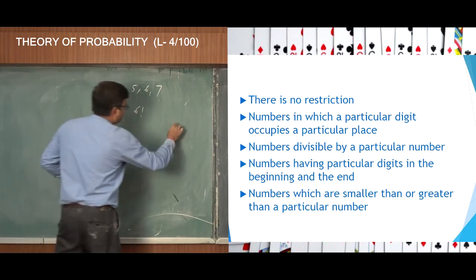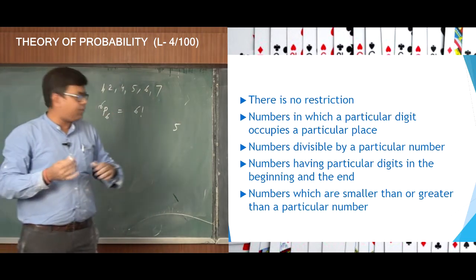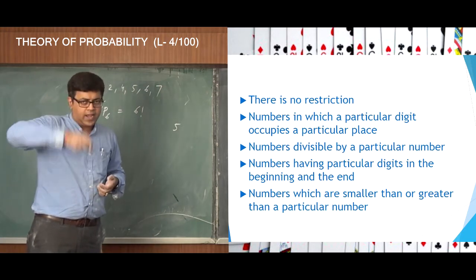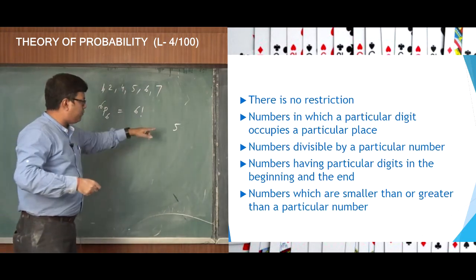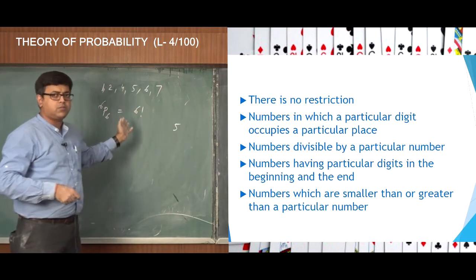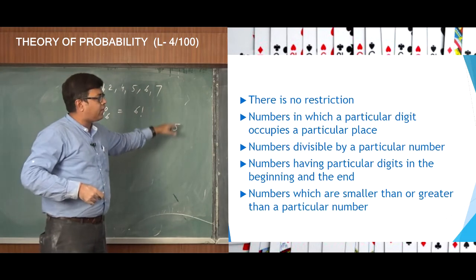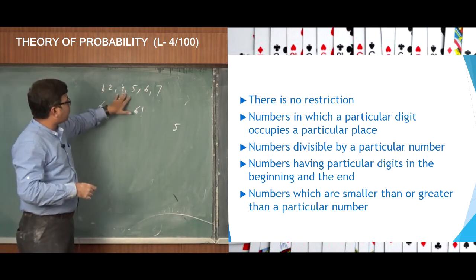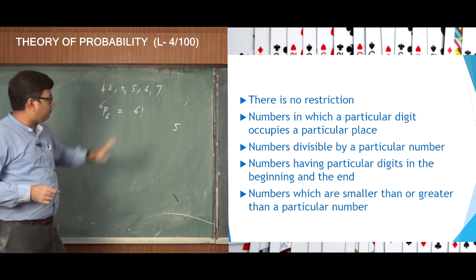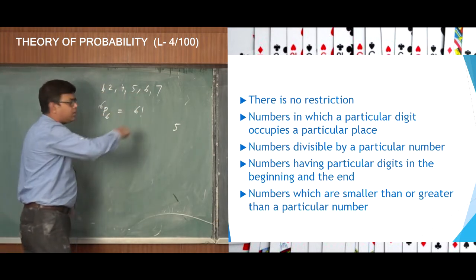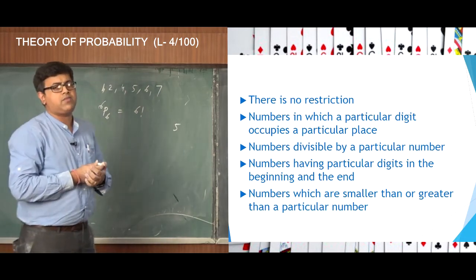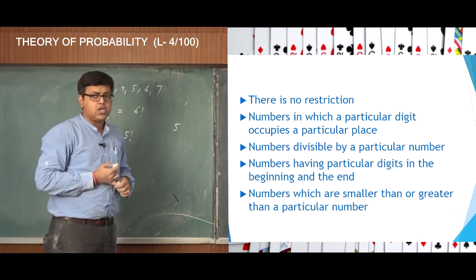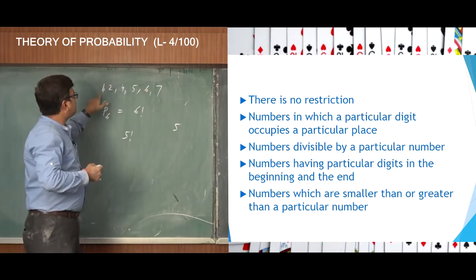If the digit 5 should always occupy the tens place, then first I have to fix 5 in the tens place — I cannot put 5 in the units place, hundreds place, thousands place, or lakhs place. Once I fix 5 in the tens place, I am left with 5 remaining digits, and those 5 digits have no restrictions. So those 5 digits can be arranged among themselves in 5 factorial ways. Therefore, 5 factorial is the total count of numbers where 5 occupies the tens place with these given digits.